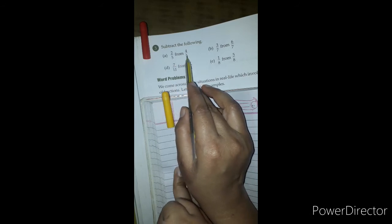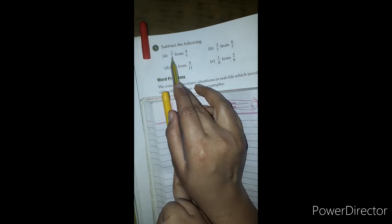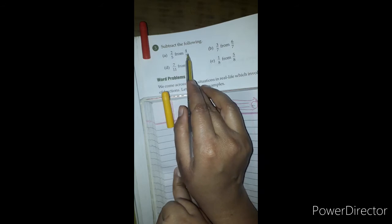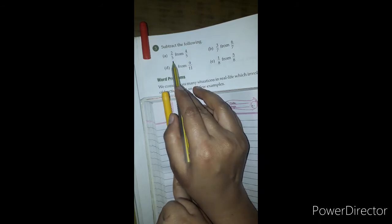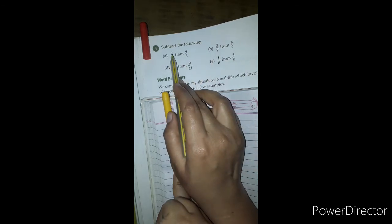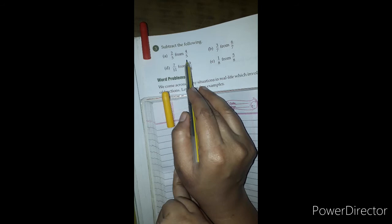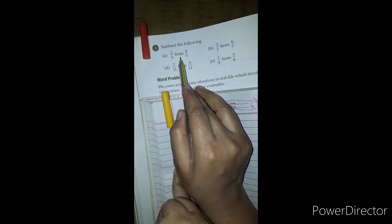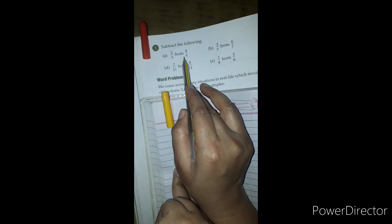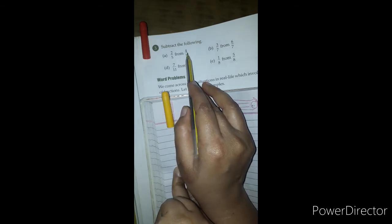...means we need to subtract this from that, meaning we subtract 2 upon 5 from 4 upon 5. Don't be confused that 2 upon 5 is written first—we will not subtract 4 upon 5 from 2 upon 5. 'From' means subtract from. So we subtract with 4 upon 5...